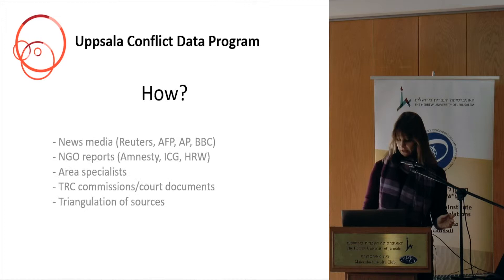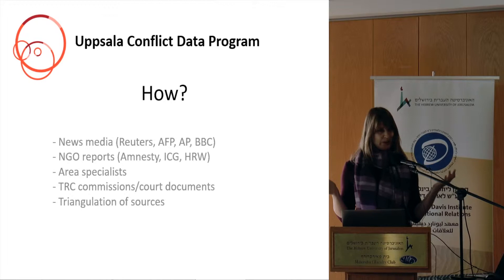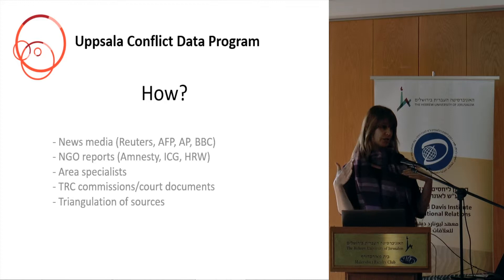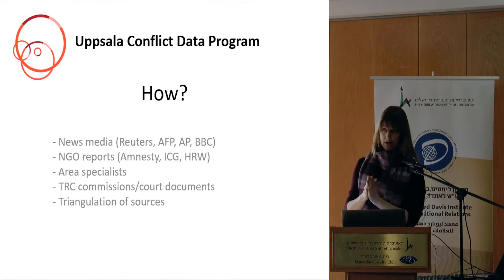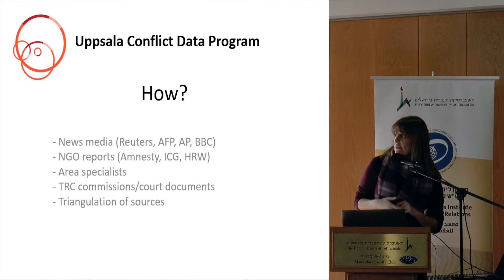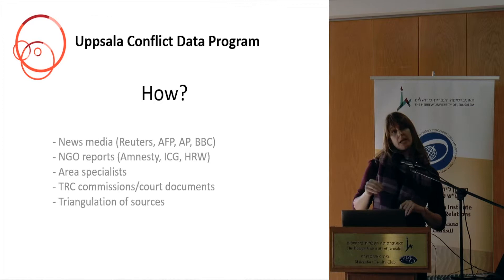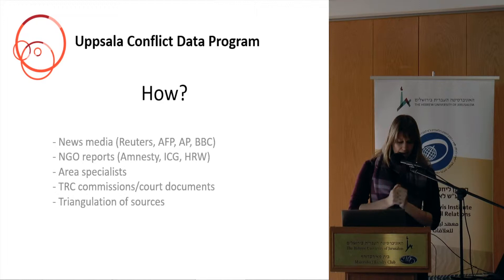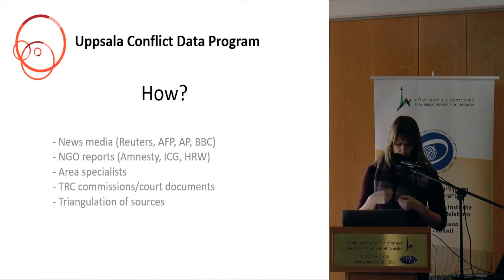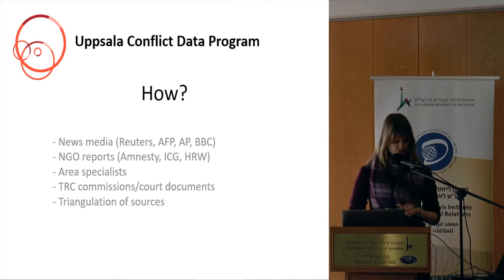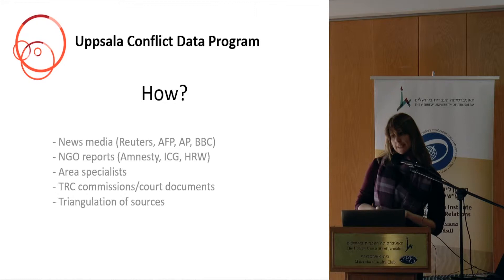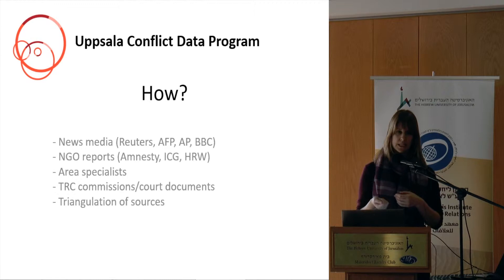How do we collect our data? The 1989 onwards data is based on events data, and that's for all four categories. To code these events, we primarily rely on the news media — both international and local. BBC in particular offers local media in translation to help cover language issues. About 80% of our events are coded using news media sources, but that data is supplemented with information from NGO reports, international organizations — particularly the UN when they do special investigations — truth commissions, other researchers, and basically whatever raw material we can find that is sufficiently detailed to apply our definitional criteria to.